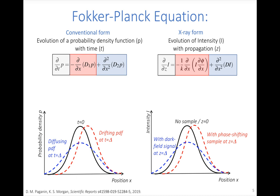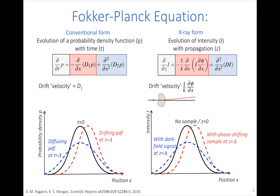In the X-ray form of the Fokker-Planck equation, instead of probability density we talk about intensity, and instead of changes with time we talk about changes with propagation distance z. The drift velocity d1 relates to the angle of refraction of the X-ray beam, described by (1/k) times the spatial derivative of the phase, where k is the wave number 2π/λ. A small angle moves the PDF a small distance; a large angle moves it further at the same propagation distance z equals delta.